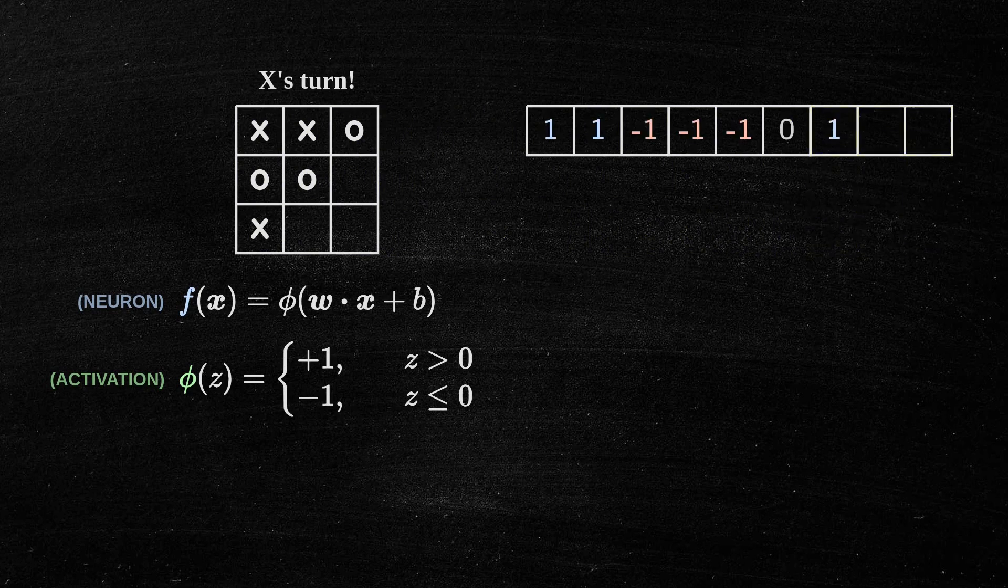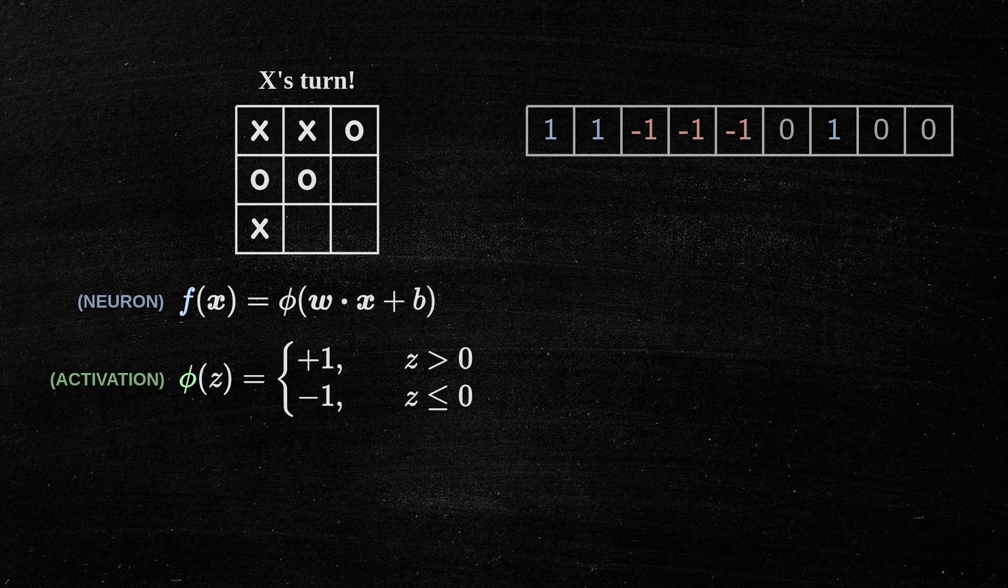One for X, minus one for O, and zero for empty spaces. In this case, we have the following vector, which we'll call X.